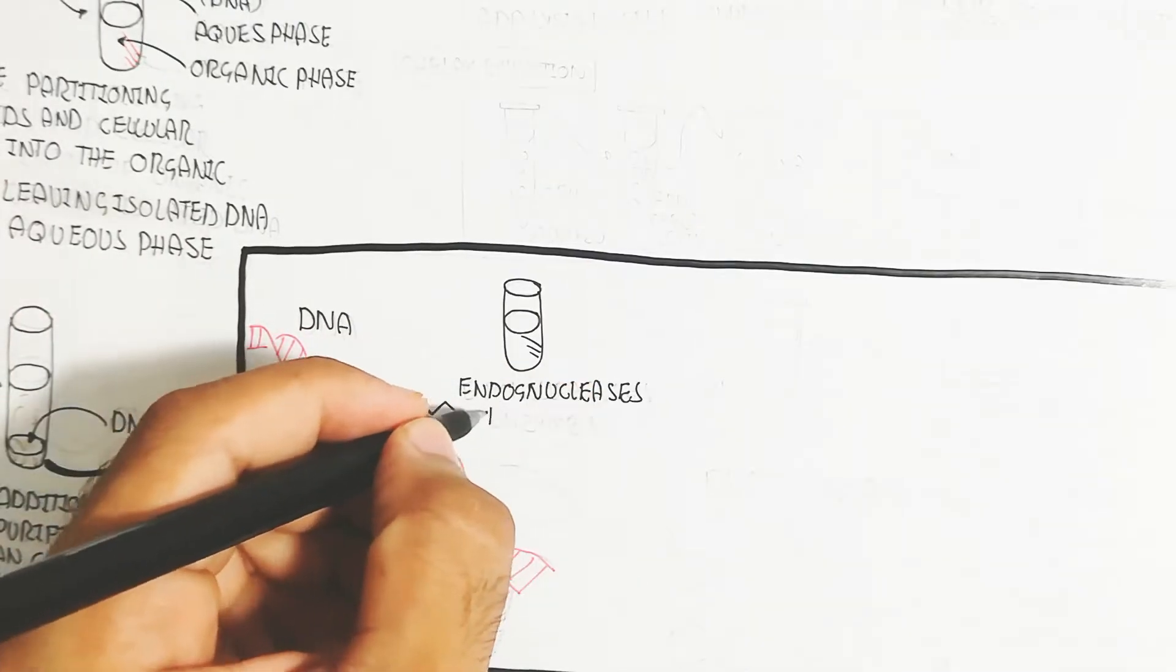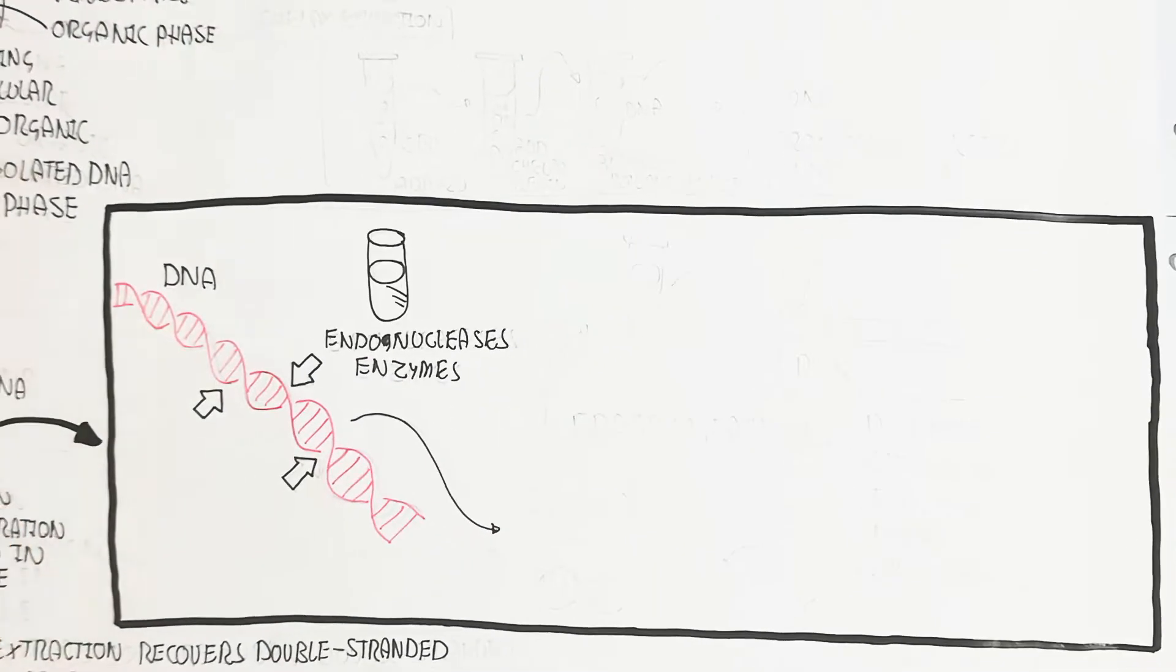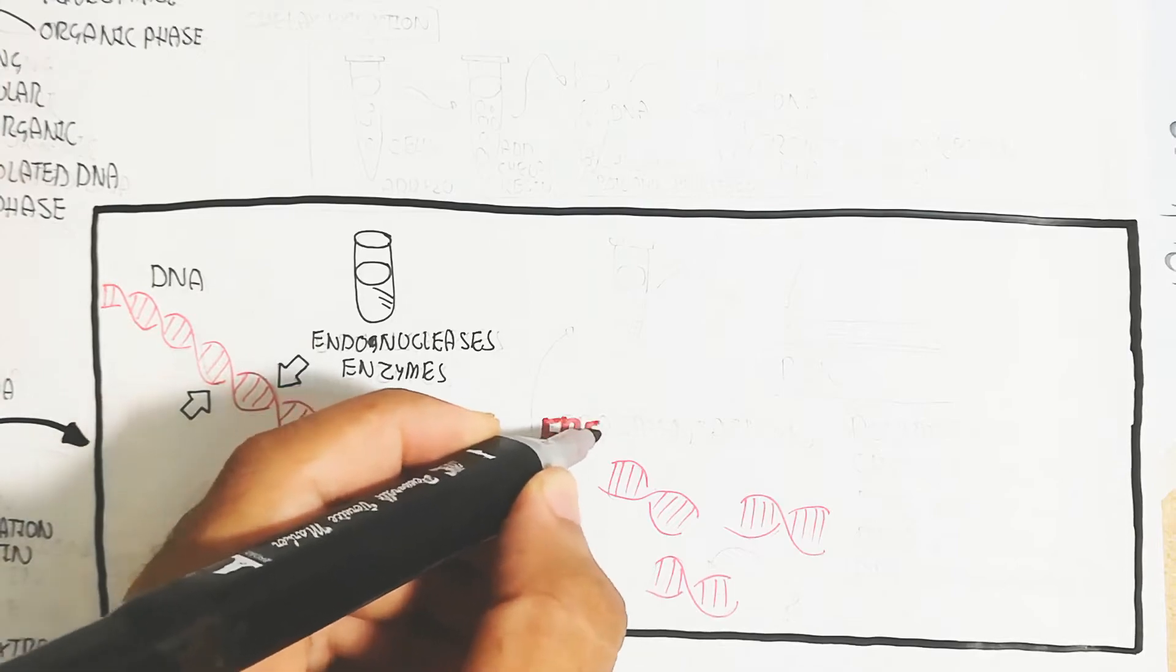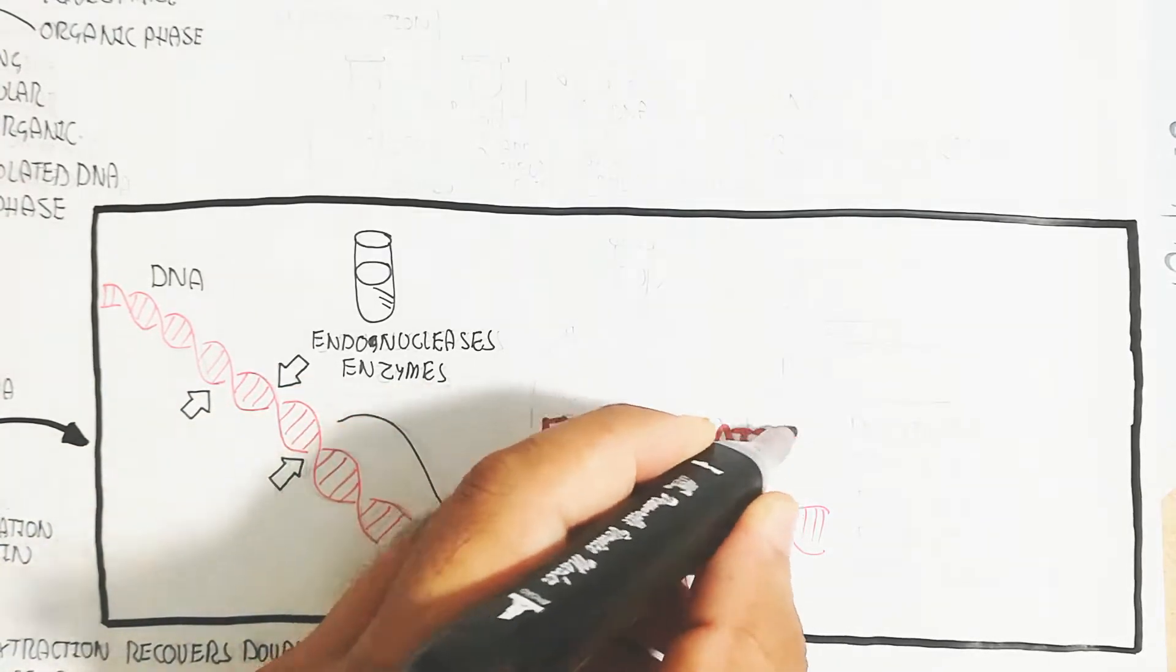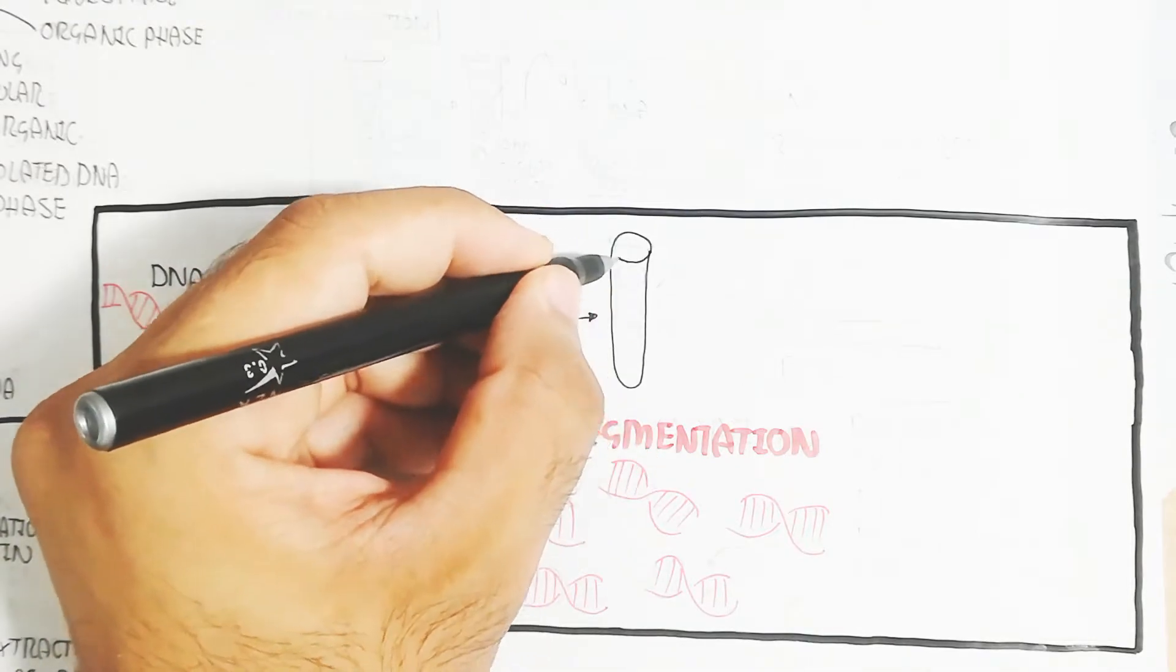Endonucleases enzyme with specific sites on the DNA will be cut, which is known as fragmentation. This fragmentation will create the fragments of the DNA on the basis of the gene difference.